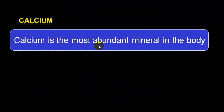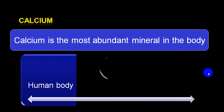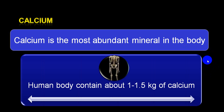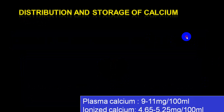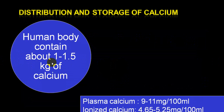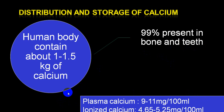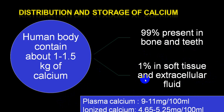Calcium is the most abundant mineral in the body. In an average person weighing about 60 to 70 kg, almost 1 to 1.5 kg is calcium. In plasma, you get 9 to 11 mg per 100 ml, and of that, ionized calcium is 4.6 to 5.25 maximum. This ionized calcium is the active material circulating in your blood. 99% is present in bone, and 1% in soft tissue and extracellular fluids.